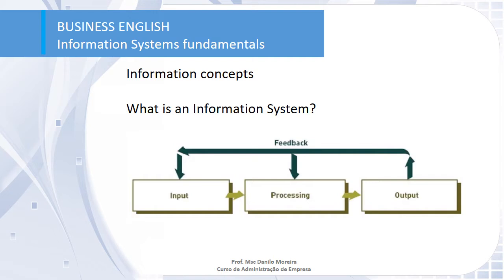What is an information system? When we have inputs and outputs, and when input goes through a process of organization and transformation of information to produce outputs, and during this process we have feedback, then we have created an information system. All information systems are composed of inputs, process, outputs, and feedback.